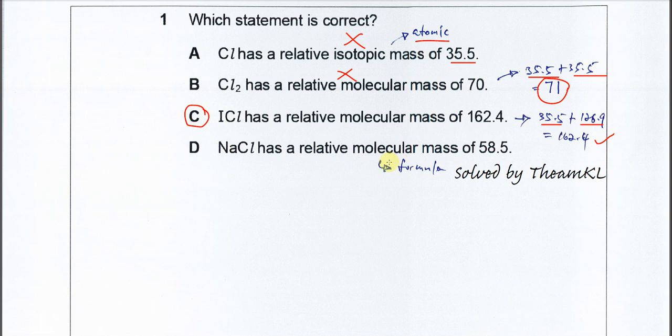Why D cannot? NaCl has a relative molecular mass - this one should be formula mass. So D cannot. Answer is C. Thank you.